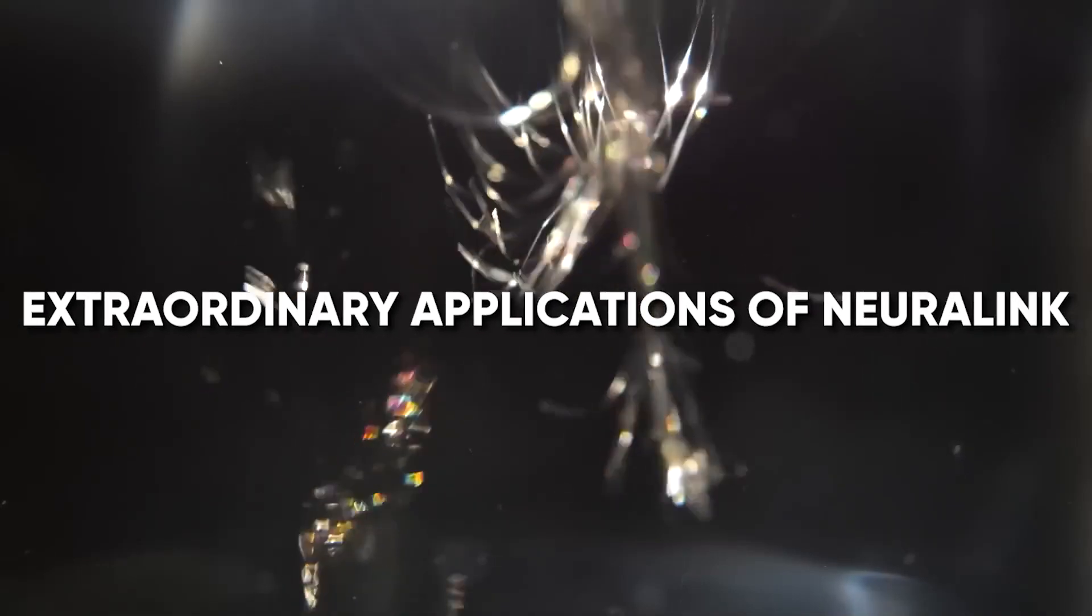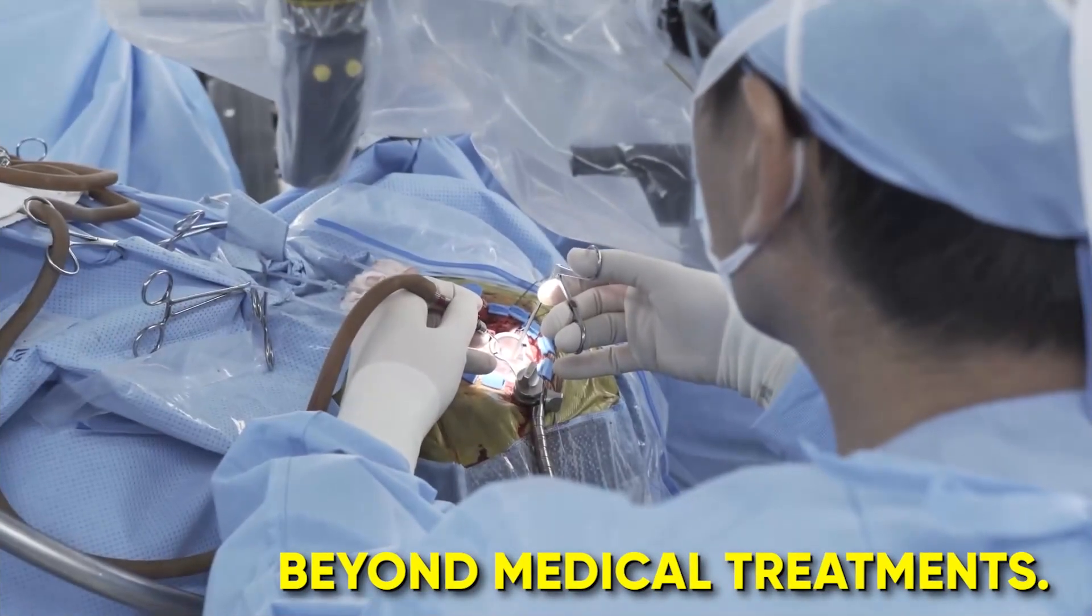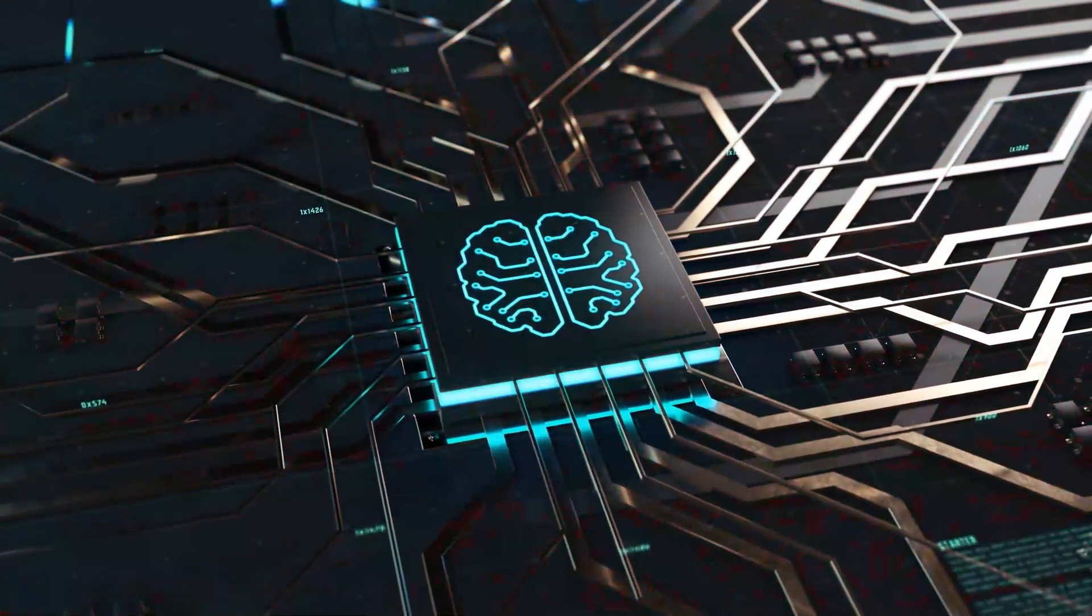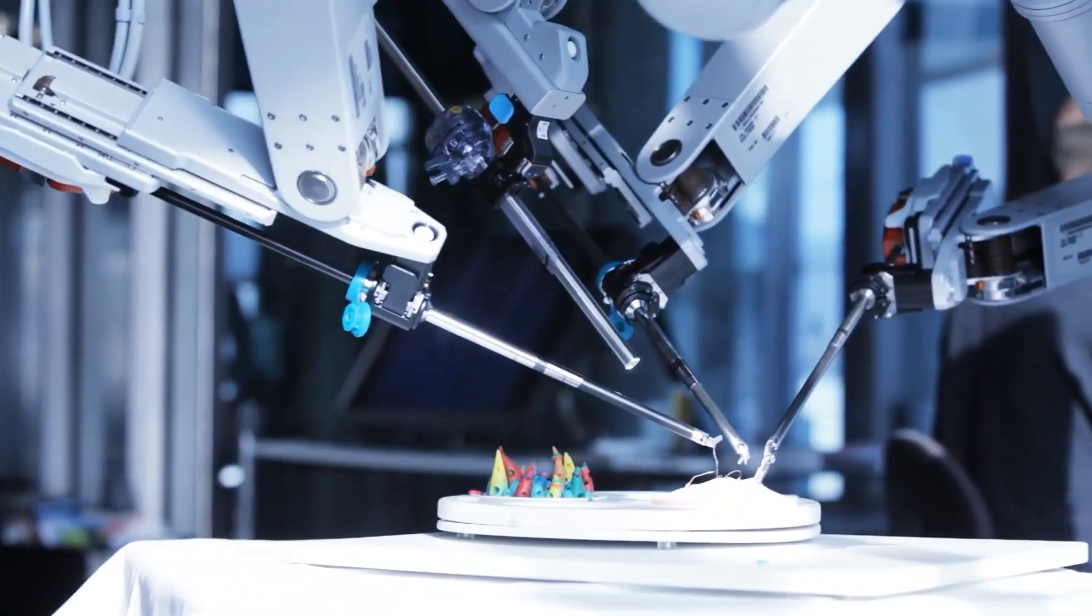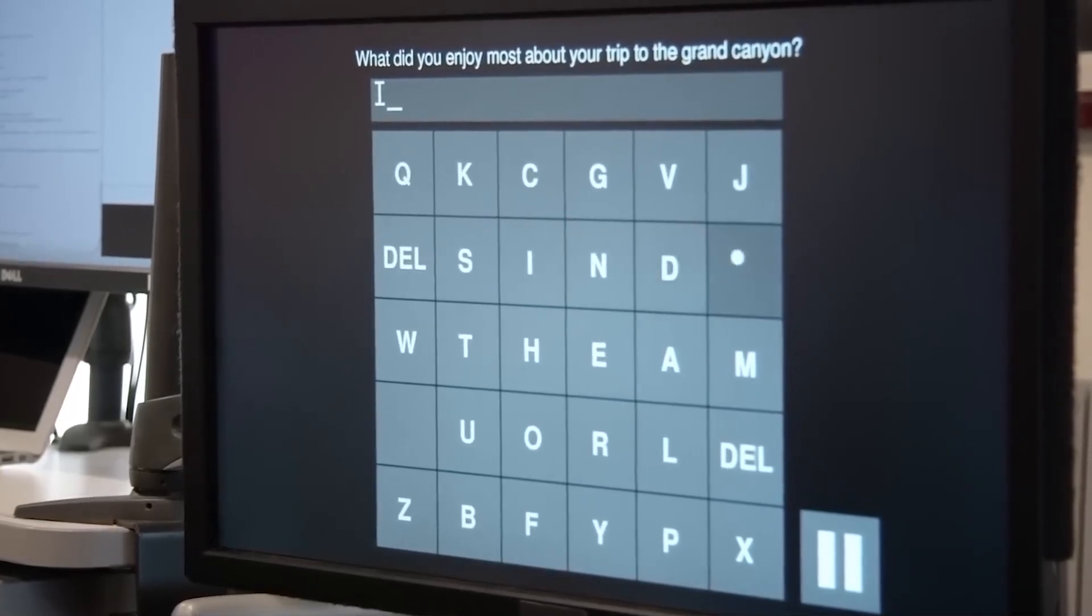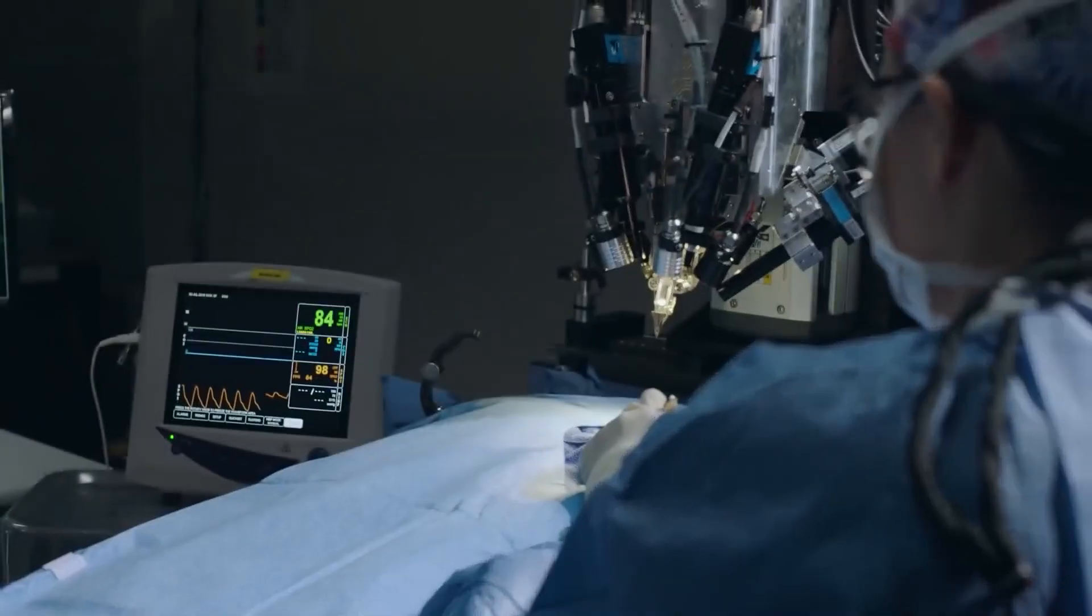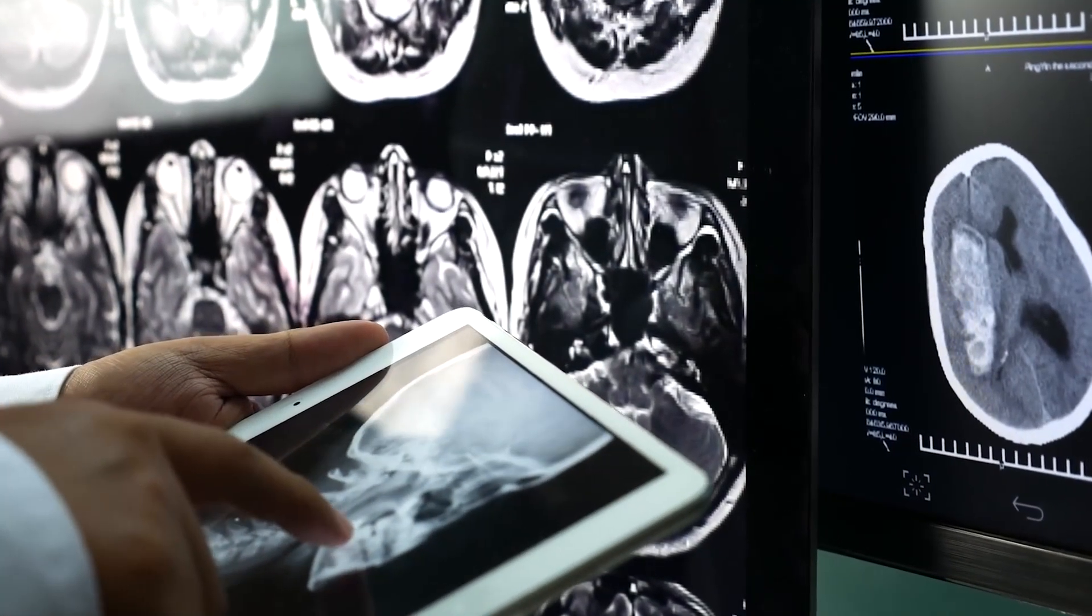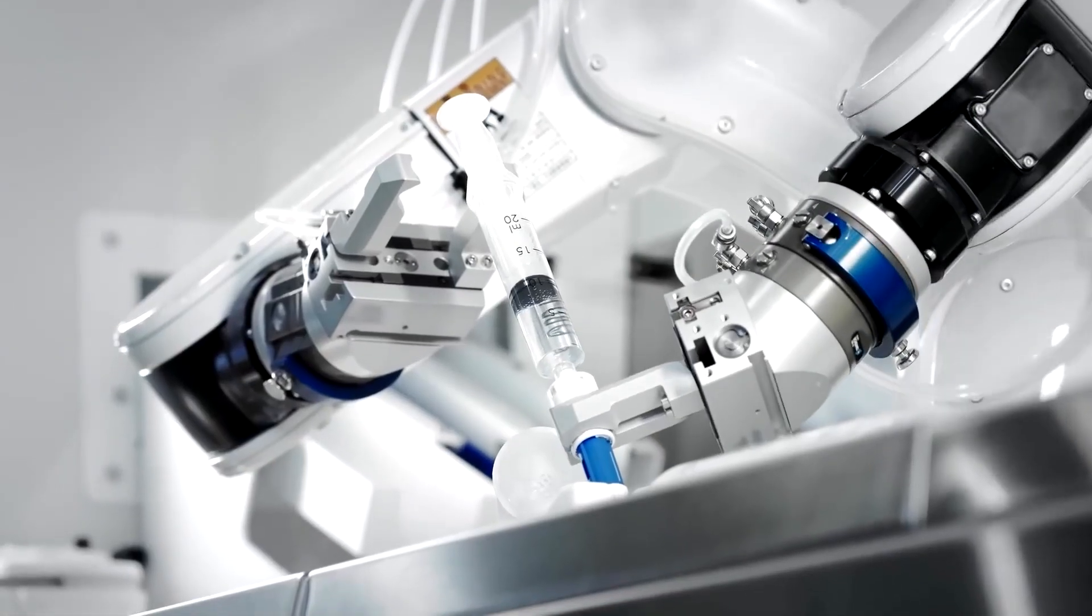Extraordinary Applications of Neuralink. Neuralink's brain-machine interfaces offer extraordinary applications beyond medical treatments. They have the potential to enhance memory and learning capabilities, allowing for efficient information storage and retrieval, and facilitating accelerated learning. Seamless communication with computers is another exciting prospect, enabling direct brain-to-machine interaction and revolutionizing technology interfaces. Neuralink's advancements may also lead to the symbiosis between humans and AI, tapping into collective intelligence for problem-solving and innovation. This collaboration could drive scientific research and technological breakthroughs and reshape industries.